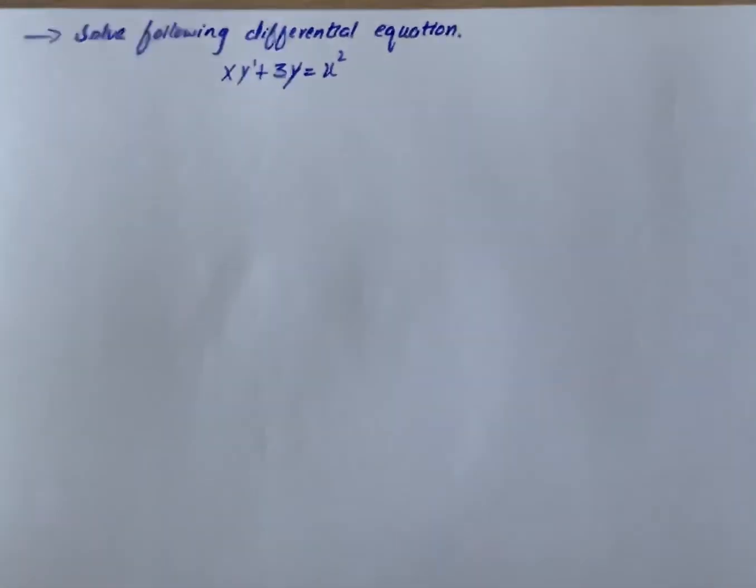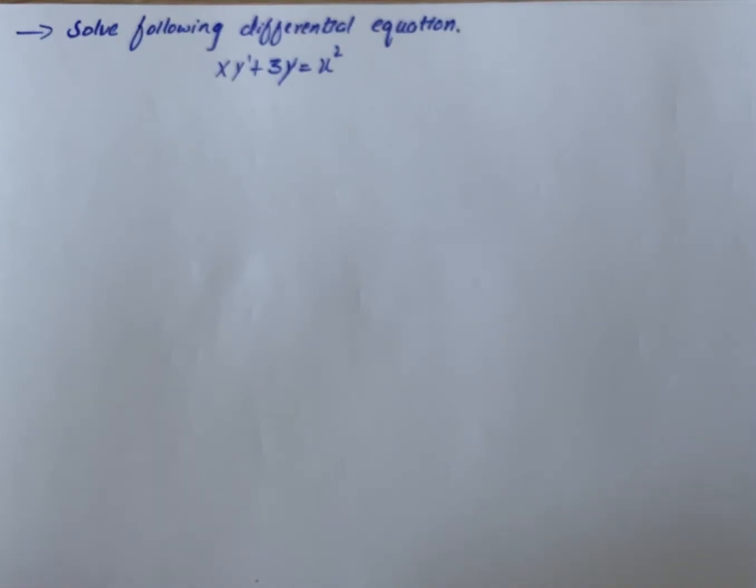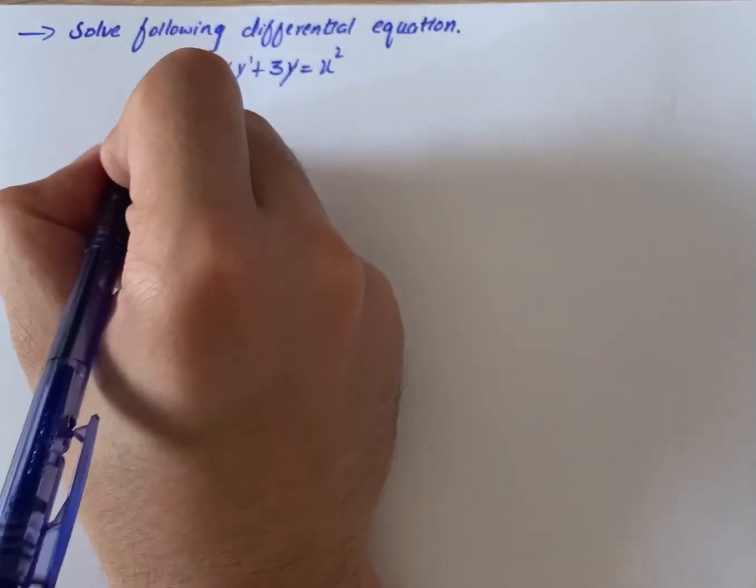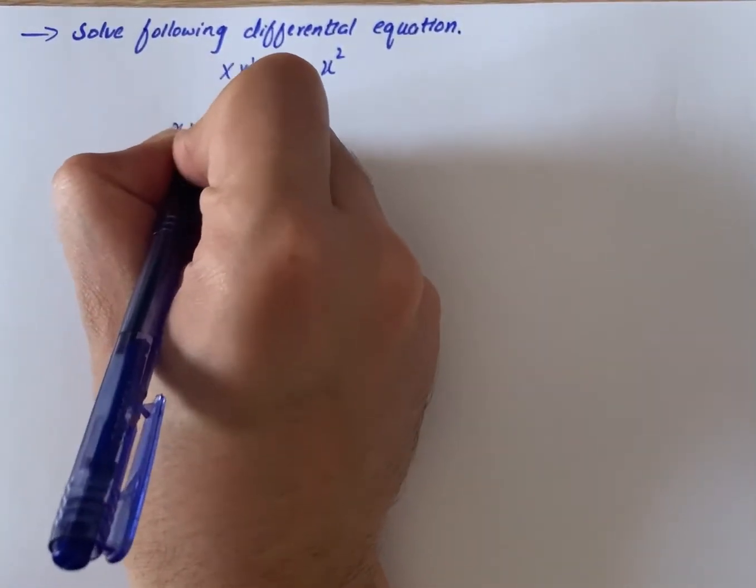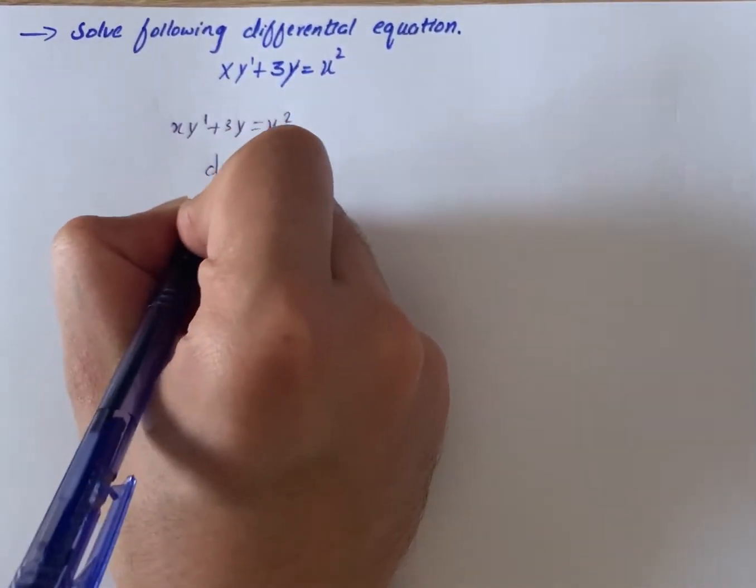The question says solve the differential equation xy' + 3y = x². So on solution, we have xy' + 3y = x². It becomes dy/dx plus 3y/x equals x.